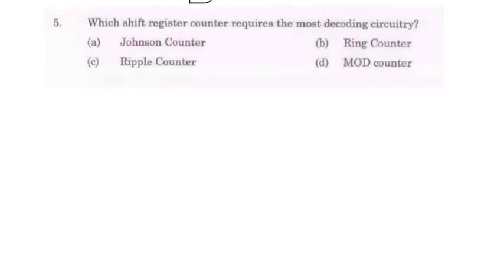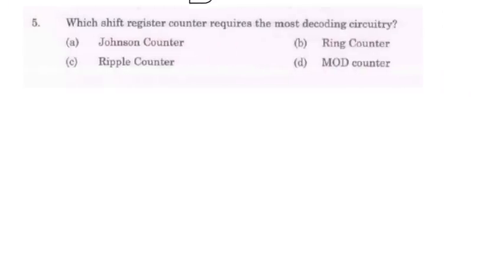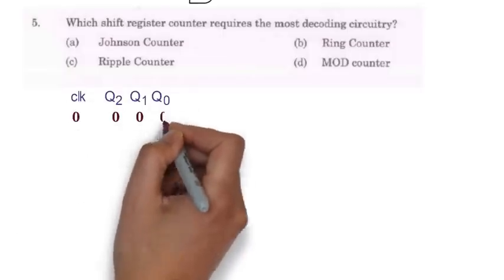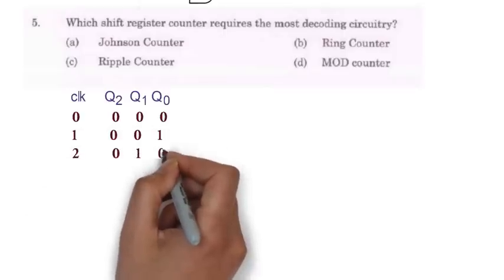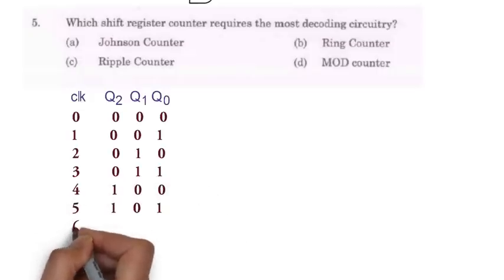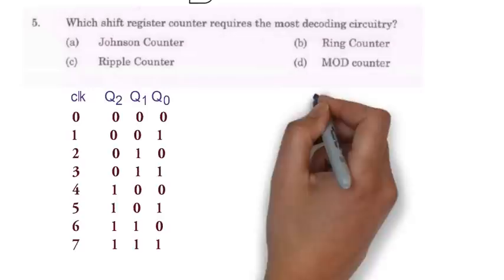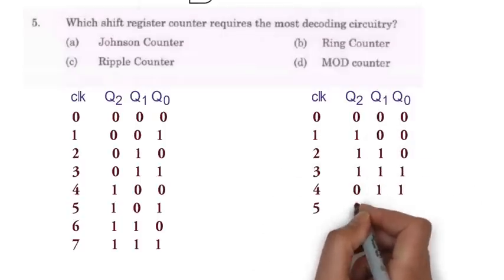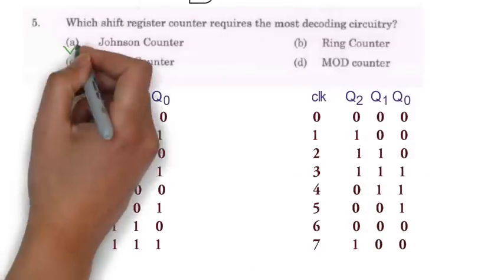Now in question number 5 they are asking which of the following shift register counter requires the most decoding circuitry. If you see the output of ring counter, ripple counter or mod counter you can easily see the output state of q2, q1 and q0 directly gives the value of clock number. If you convert them in decimal then it will directly show the clock number. But in case of Johnson counter output state does not reflect the clock number so decoding circuitry will be complex for Johnson counter.